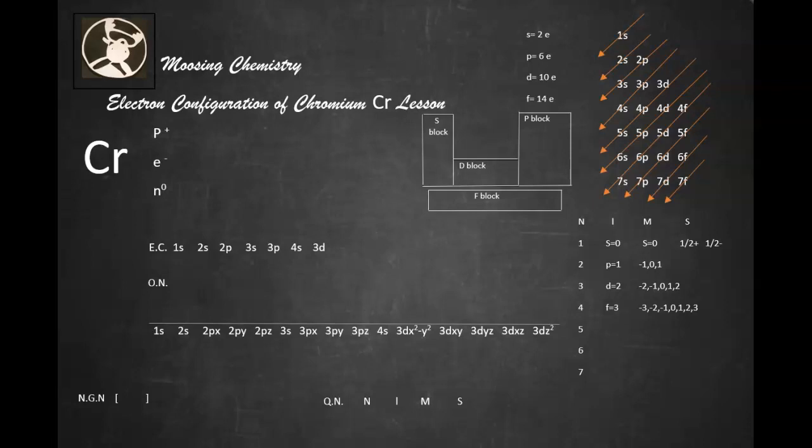Chromium happens to be the 24th element on the periodic table. We're going to have 24 right here. And the AMU, or the mass number, is going to be 52.